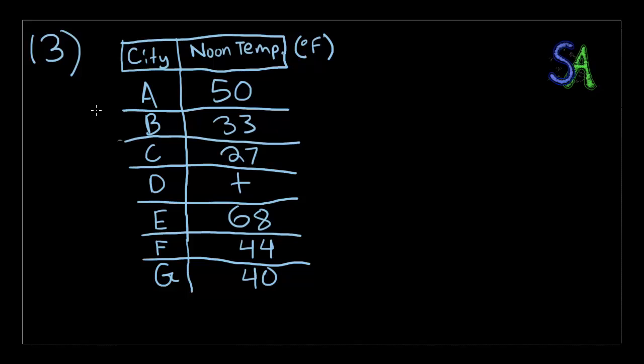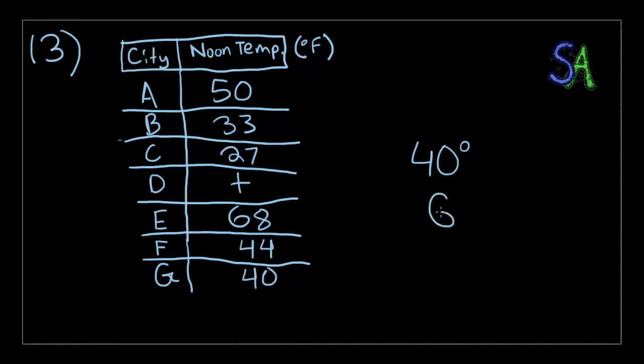If the median noon temperature of these cities is 40 degrees Fahrenheit, then the noon temperature for city D could be any of the following choices except which one — so, which of the choices are not possible for the temperature of city D? We know the median temperature is 40 degrees, which is city G.